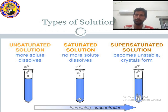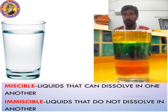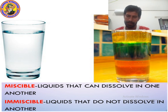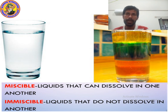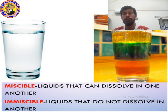Now let's move on to the next point. Kids, let's talk about two different types of liquids: miscible liquid and immiscible liquid. Suppose I have a glass of water and I pour some salt — tell me, will the salt dissolve or not? The salt will dissolve.